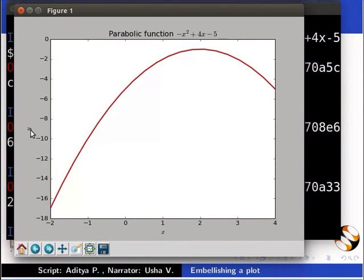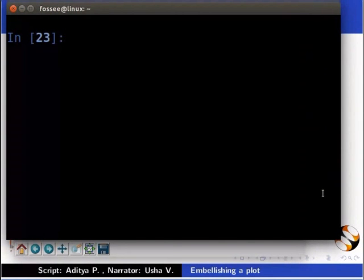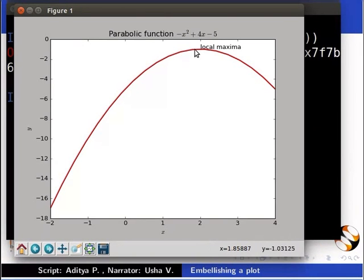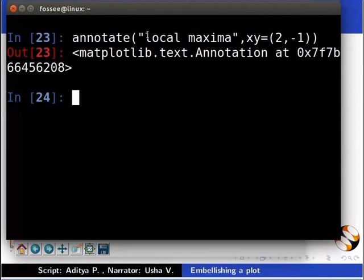Now, we will name the points considering point as local maxima. To name a point, we use the function annotate. Type annotate inside the brackets inside inverted commas local maxima comma xy is equal to inside brackets 2 comma minus 1. We can see the local maxima at point 2 comma minus 1. The first argument in annotate command is the name of the point. The second argument represents the coordinates of the point. It is a tuple containing two numbers. The first is x-coordinate and second is y-coordinate.